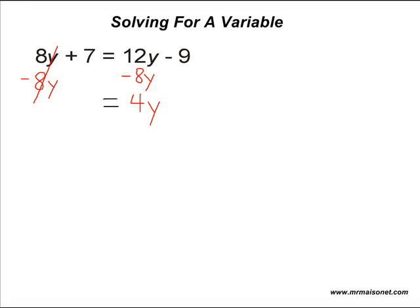On the left-hand side, we still have the number 7, so we are going to drop that number 7 down. Now we must simplify the equation: 7 is equal to 4y minus 9.